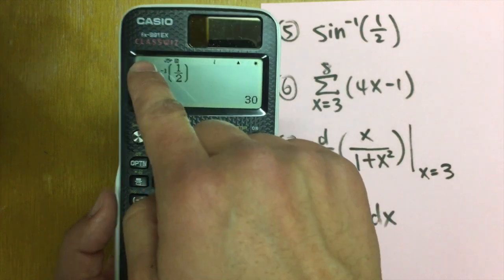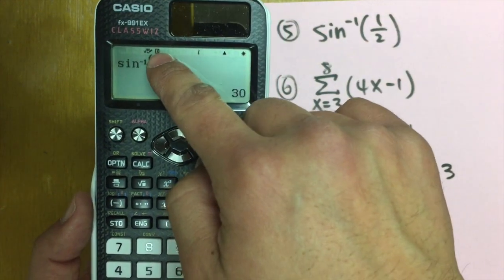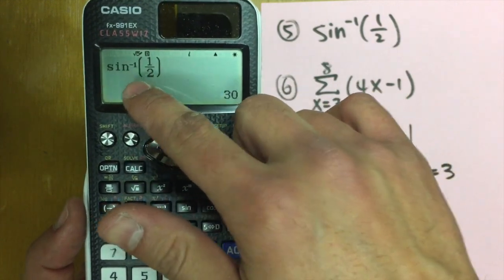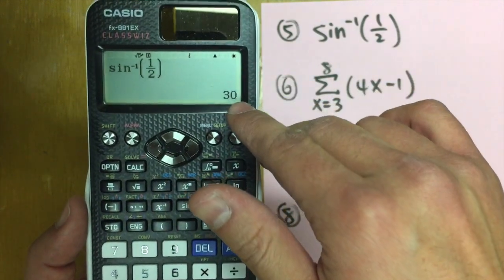We have 30. 30 what? Well, as you can see, we have the little d right here. The d stands for degree. So sine of 30 degree is one half. That means the inverse sine of one half is 30 degrees. Well,